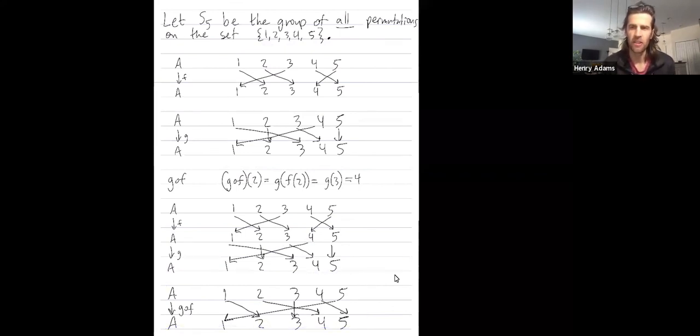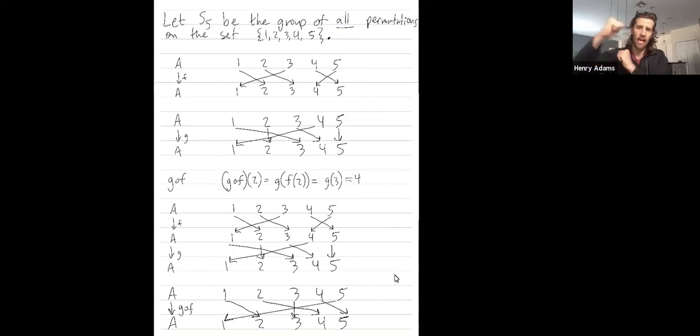Permutation groups are typically not abelian, not commutative. S5 is definitely not abelian, not commutative. When I combine F and G in one order, it's not going to be the same thing in this example. It's not going to be the same thing as combining F and G in the opposite order.